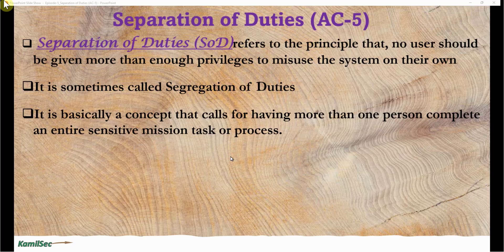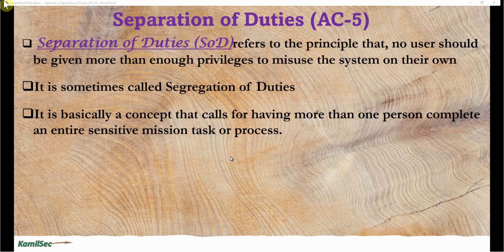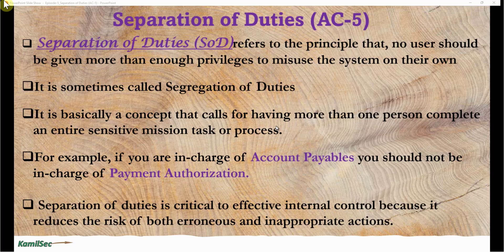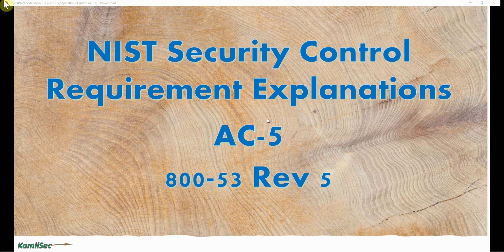For example, when you go to the bank and you're trying to withdraw a large sum of money, the cashier who counts the money will call a second cashier or a manager to recount it — these are all controls to make sure one person does not abuse the system. Similarly, if you are in charge of accounts payable, you should not also be in charge of payment authorization. Separation of duties is critical to effective internal control because it reduces the risk of both erroneous and inappropriate action.